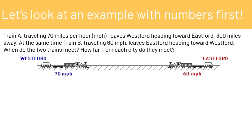To learn how to solve equations symbolically, we are going to look at a problem with numbers first. We have train A traveling at 70 mph, leaving Westford heading towards Eastford, 300 miles away.